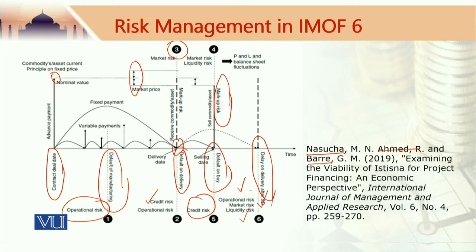Let me summarize. In case of Istisna, there is a possibility of operational risk because it is a special project — there is always a possibility of some mistakes and oversights. There is always a possibility of default — on payment or on delivery — which gives rise to credit risk. There is a relevance of markup risk because the price in Istisna mode of financing is fixed. And of course there is relevance to liquidity risk. All these risks are interlinked: if there is a change in one risk, that would change the perception and quantification of the other risks as well.